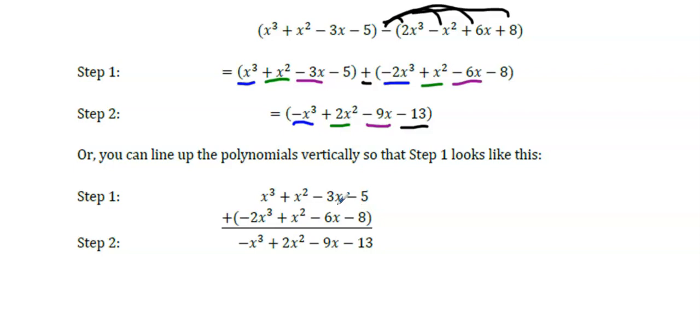Or you can line them up vertically like they did here. Again, they still changed it to plus and have all of the signs opposite that they were originally. And then they just add down.